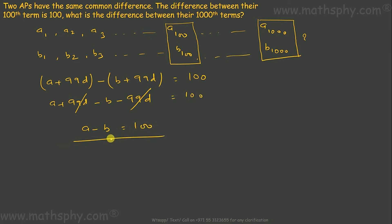It says the difference between the 100th terms is 100, and now I can see the difference between the first terms is also 100. Let's take an example — I'll write two series here. Let's take 2, 4, 6, 8, 10.